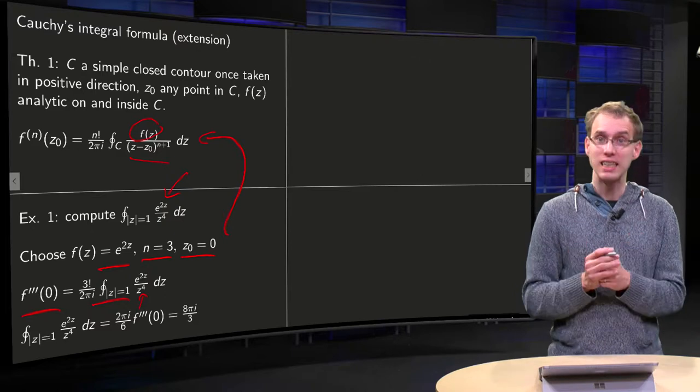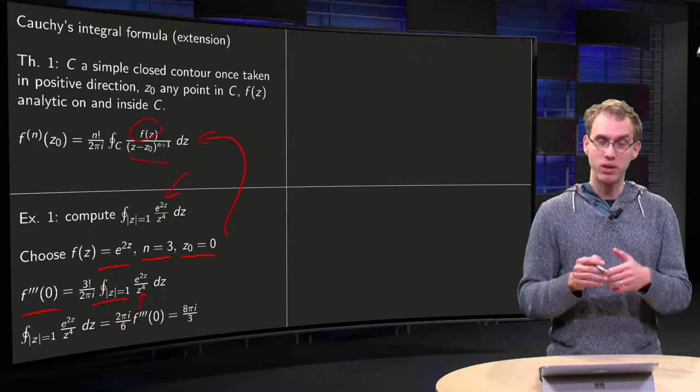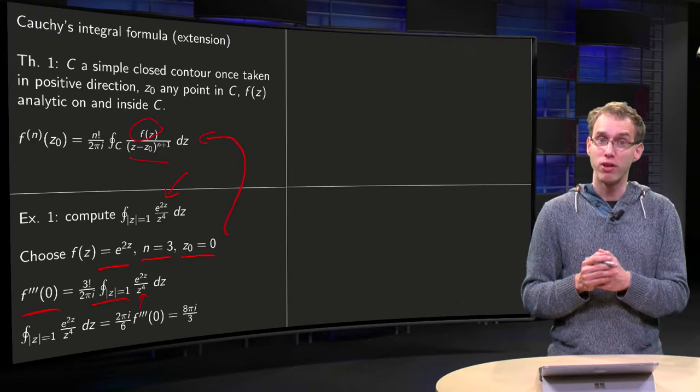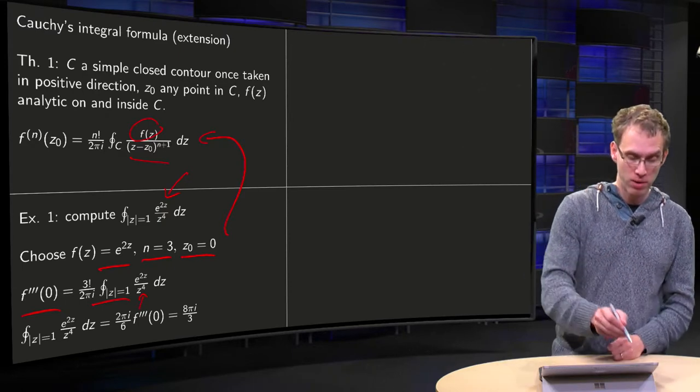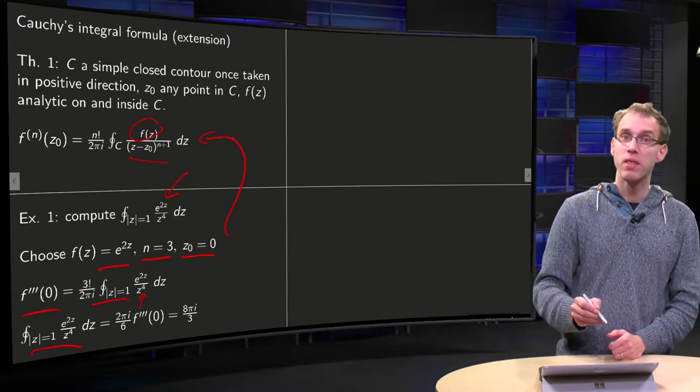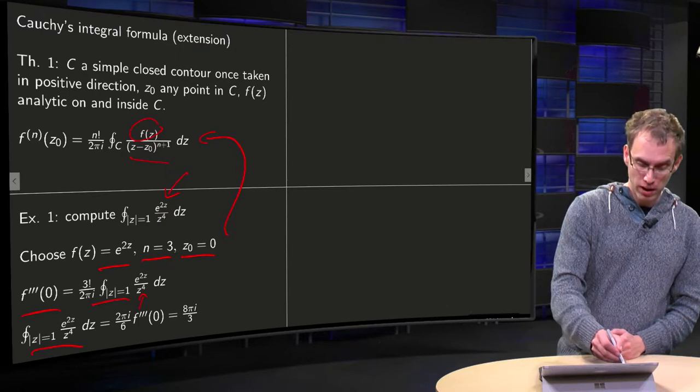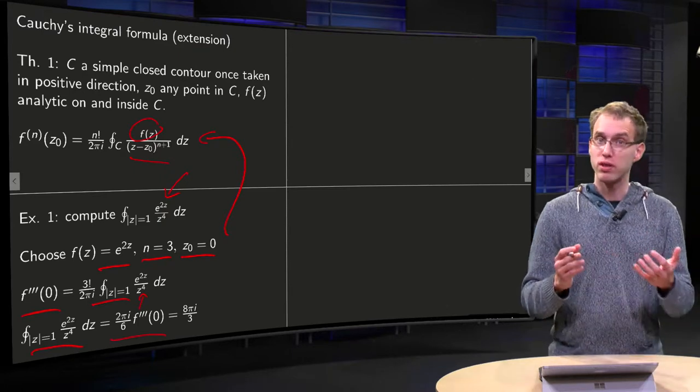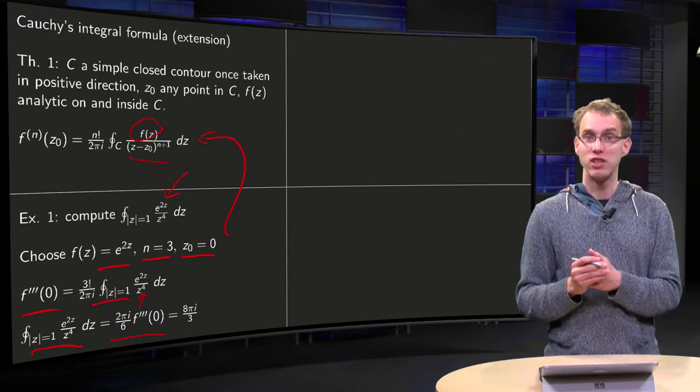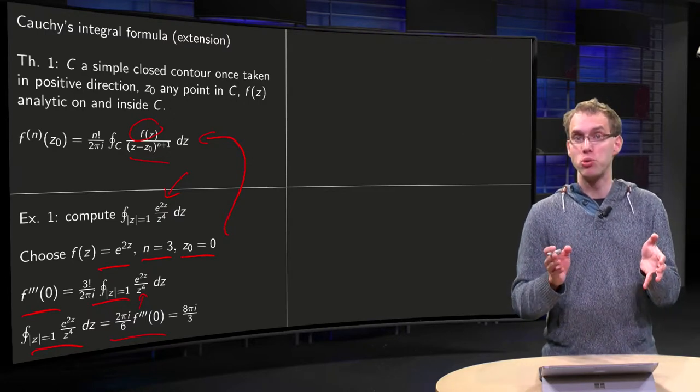which is exactly the integral you want to compute, so you can express your integral in terms of the third derivative of f at 0. So your unknown integral equals 2πi over 3 factorial, 3 factorial equals 6 times the third derivative of f at 0, but f is just e to the power 2z,